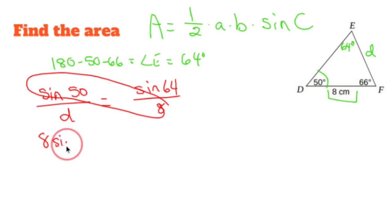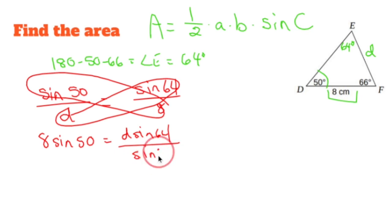So 8 sine 50 is going to equal d sine 64. Let's throw this all into our calculator all at once. So I have sine 64 over here. Cross that out, that gets d all by itself. 8 times sine 50 over sine 64 is 6.8184.